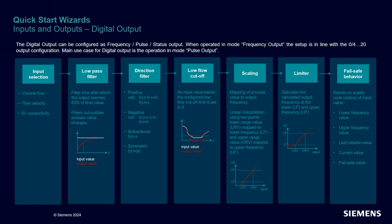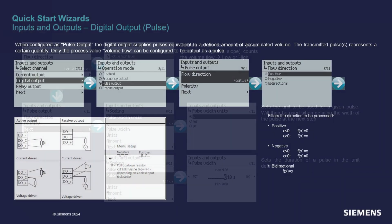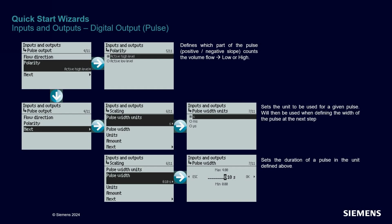We will skip over the details of the digital output as a frequency output so that we can focus more on the pulse output mode. When the digital output is set to pulse output mode, it supplies a number of pulses equivalent to an accumulated volume. The wizard starts by setting the desired direction of flow, then takes you through setting the desired polarity and the detailed controls of the pulses, such as the width.